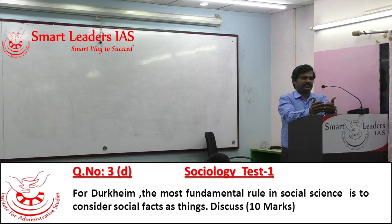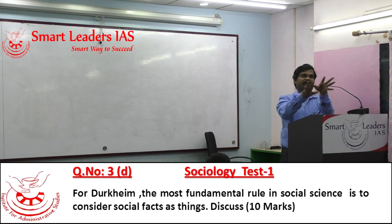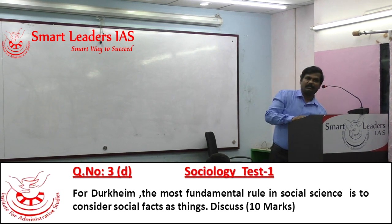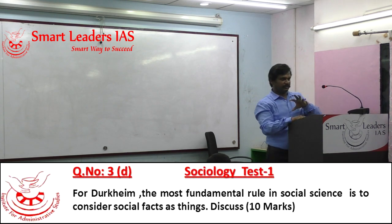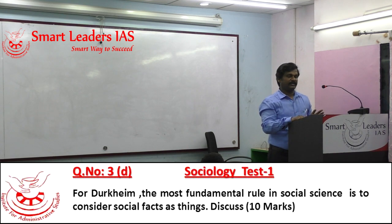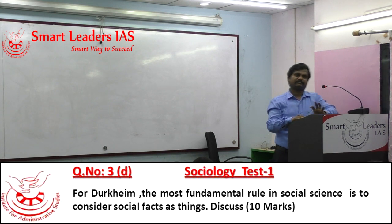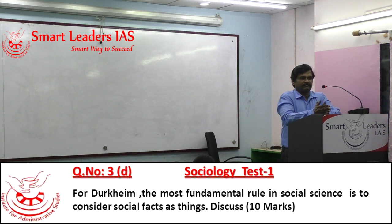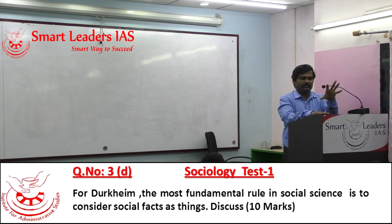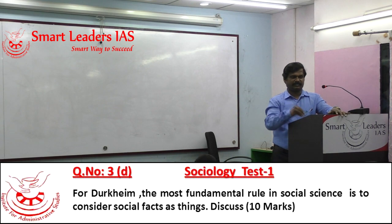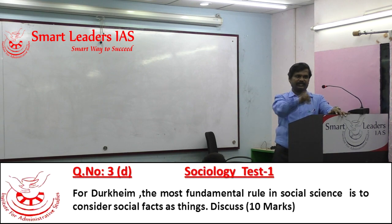Suicide is generally present — it is not class-dependent, not race-dependent, and not geography-dependent. It is independent of individuals and independent of geography or biology. It is generally diffused everywhere and controls the individual, because every individual living in society will be exposed to this suicidogenic current.